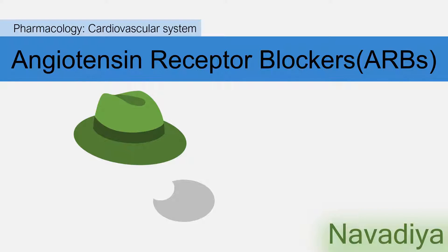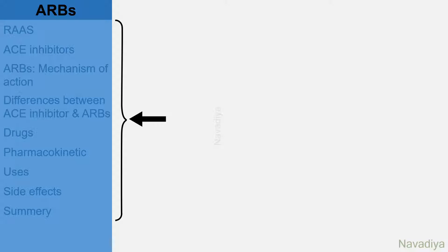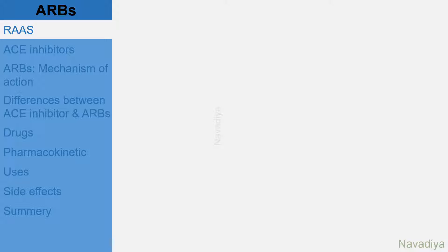Hey guys, in this video we will see angiotensin receptor blockers, in short ARBs. It is a group of drugs that inhibit the renin angiotensin aldosterone system. We will study the topic under these headings. So let's start with some basic points first.